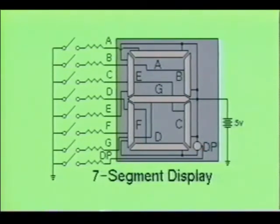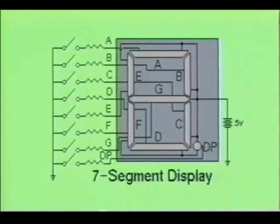The typical forward voltage for each segment is 1.2 volts, and the forward current limit is usually set at 20 milliamps. By turning on the appropriate LED segments, any of the decimal numbers can be displayed.